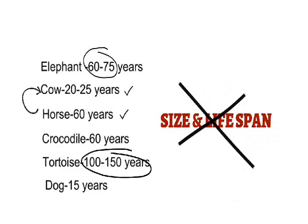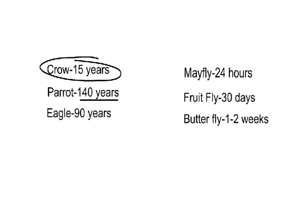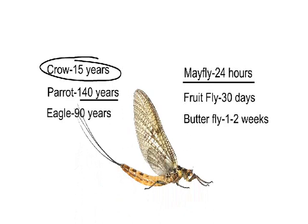Here are some other examples. The parrot lives for 140 years, and the crow, which is of nearly the same size, lives for only 15 years. The mayfly lives for only 24 hours — it has the shortest known lifespan.